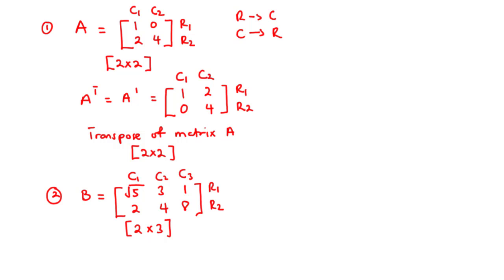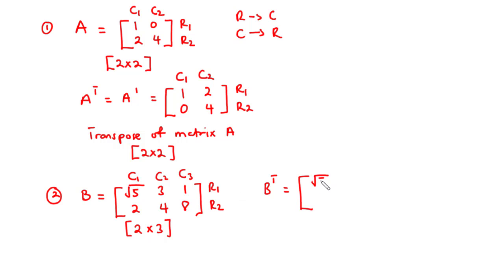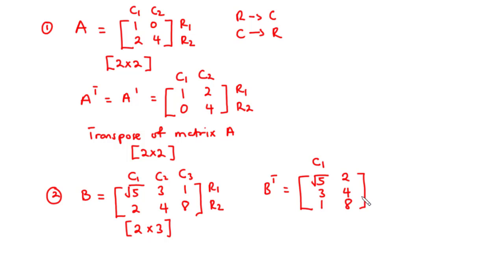Let's find the transpose of this matrix, given by B superscript T. We interchange the rows and columns: elements in row 1 become elements in column 1, giving us √5, 3, 1. Elements in row 2 become elements in column 2, giving us 2, 4, 8. You realize that this is a 3x2 matrix. So matrix B is a 2x3 matrix, but the transpose of matrix B is a 3x2 matrix.